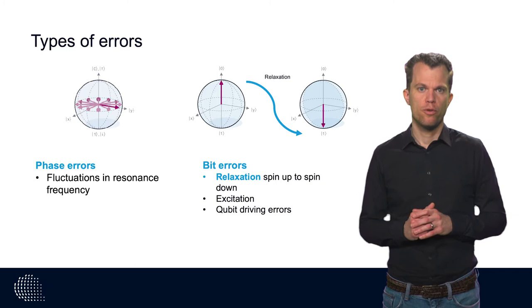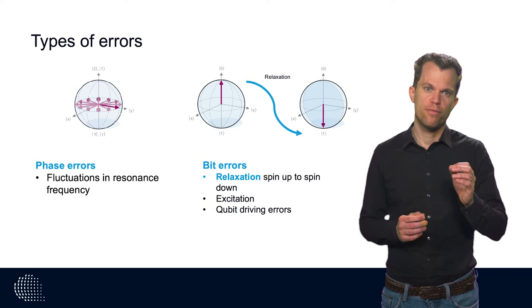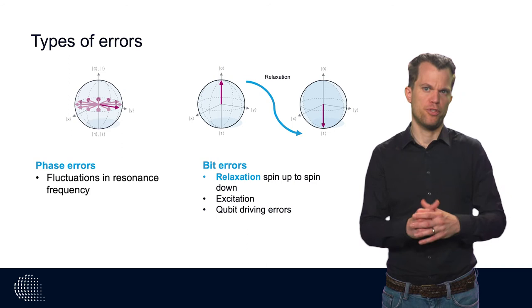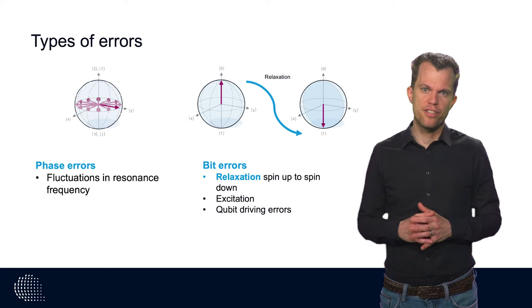A phase flip error is an error where the phase of the quantum state is changed. Note that the amplitude in the spin-up, spin-down basis is not affected. From an information perspective, it may seem that these two errors are similar kinds of errors.